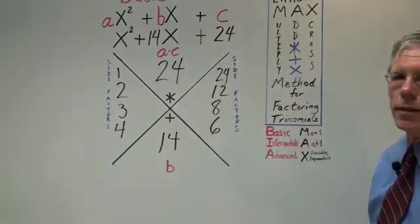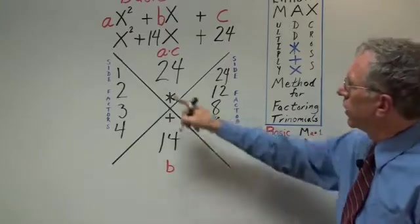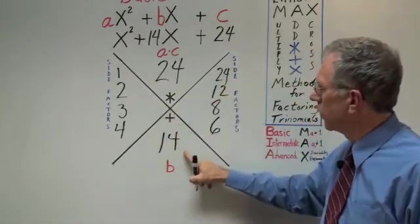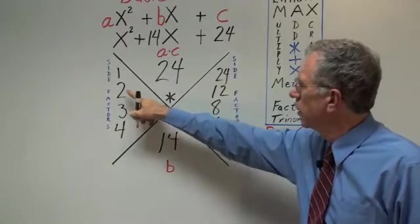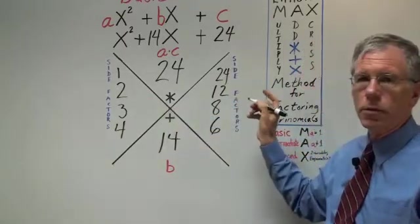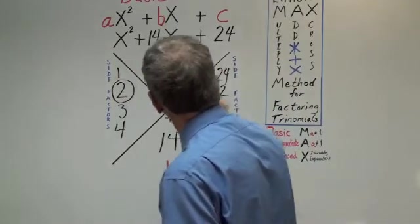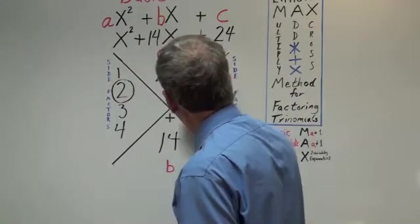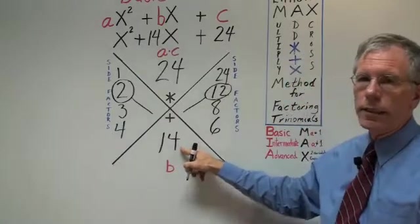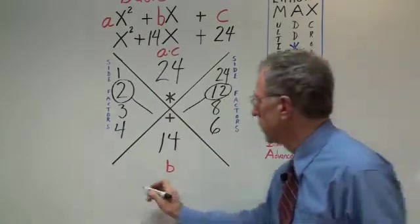At this point, if you want to be very thorough, you say 1 plus 24 does not equal 14. Then 2 plus 12 — we're done. So you circle the 2, you circle the 12, indicating that they give 14. At this point, you basically have the answer.